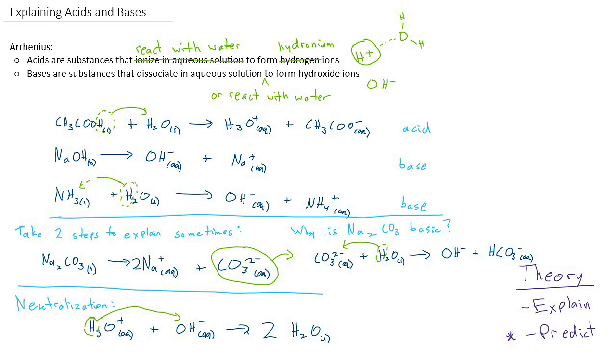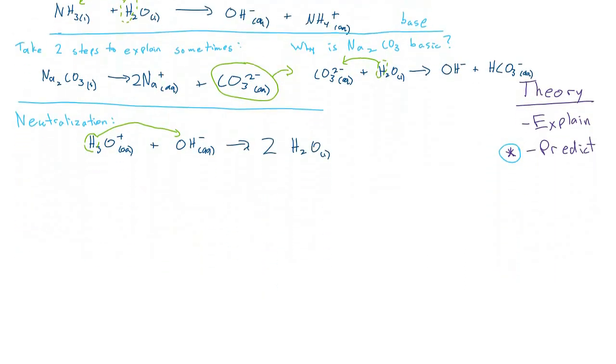What I want to look at next is this idea of predicting. So far we were able to explain. We can use these two definitions to explain why something is acidic or basic. But what about predicting? The question is, can we predict whether this hydrogen phosphate ion will act as an acid or as a base? Let's see if we can write equations that match with Arrhenius' modified definitions.